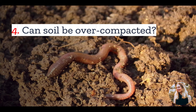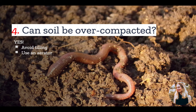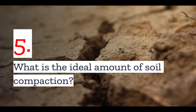Number four: we've covered why soil compaction is important, but is it possible to have too much of a good thing? Well, the answer, as is usually the case, is yes — you can overcompact soil. The problem with overly compacted soil is that it makes it difficult to grow plants. Fortunately, there are a few things you can do to help overly compacted soil recover. The best way is to avoid tilling your soil when it's too wet or dry, or even better, avoid tilling it altogether. You can also help loosen compacted soil by using an aerator, working in organic materials, and adding earthworms.